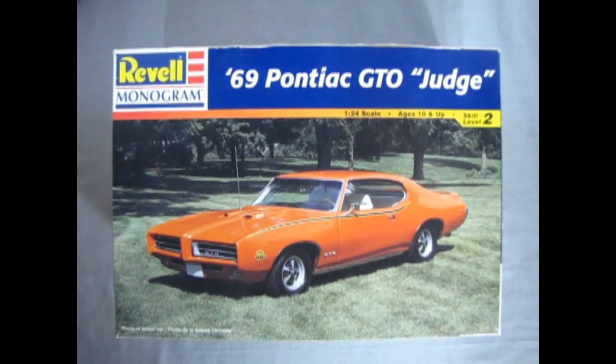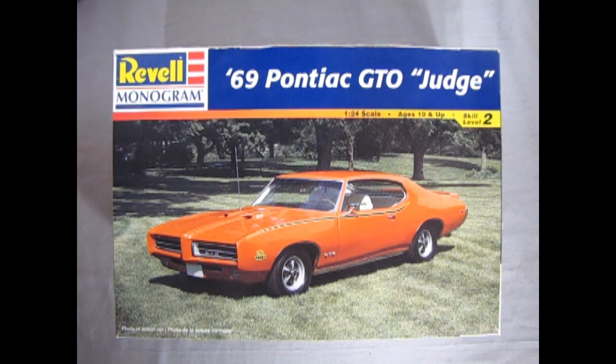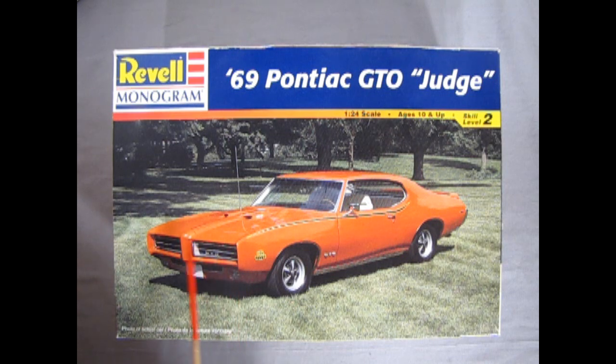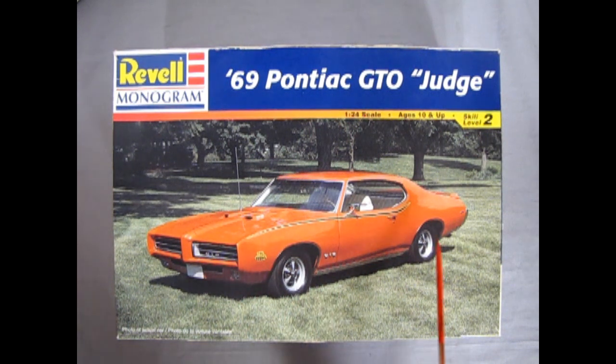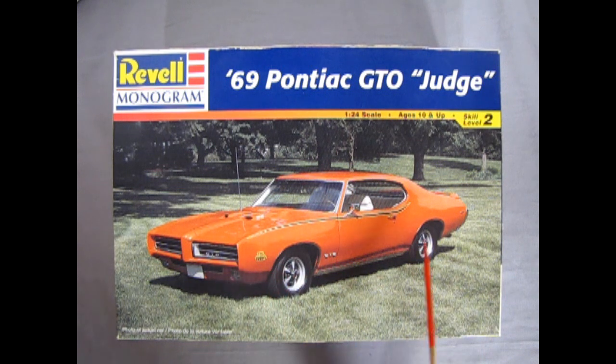The muscle car craze of the 60s started with the 1964 Pontiac GTO. What started as an option package on the Tempest went on to shape an entire generation of high-performance machines. Today the letters GTO command respect. For 1968, Pontiac introduced the first-ever enduro bumper on their Pontiac GTO, and in 1969 they brought out the Judge package which included the spoiler on the back and the decals.